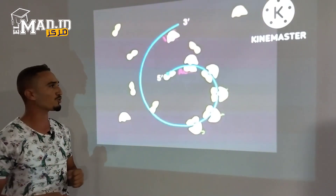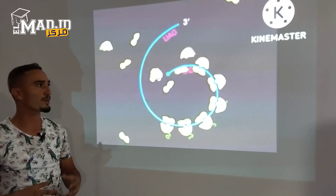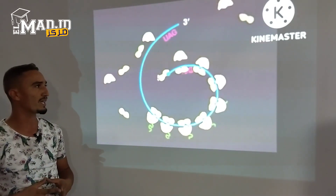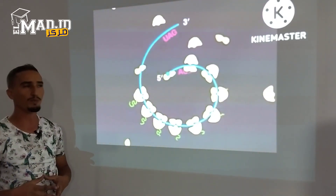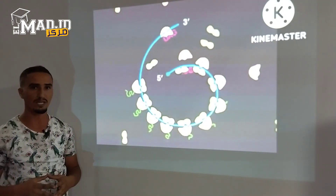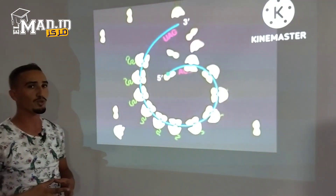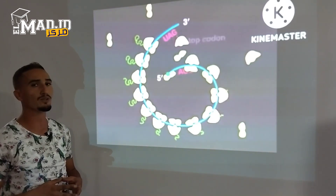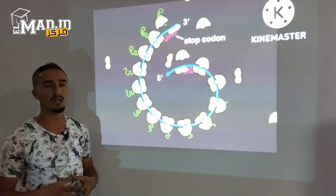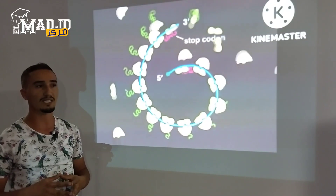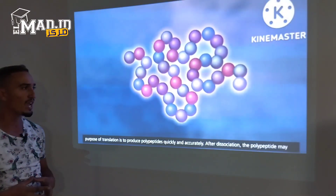New ribosomes attach at the five prime end at the same rate as the previous ones move away. This multiple initiation allows cells to make much more protein from a single message, rather than waiting for one ribosome to complete the task before another could begin. When the ribosome reaches the stop codon, the ribosome, new protein, and the messenger RNA dissociate from each other.